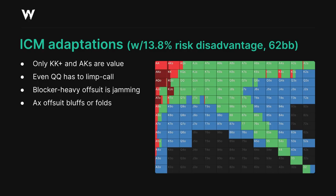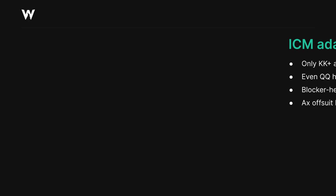We're folding hands as strong as queen-10 offsuit, ace-8 offsuit and king-3 suited here as well, so it's clearly not a spot where we want to put ourselves in a lot of limp call situations.